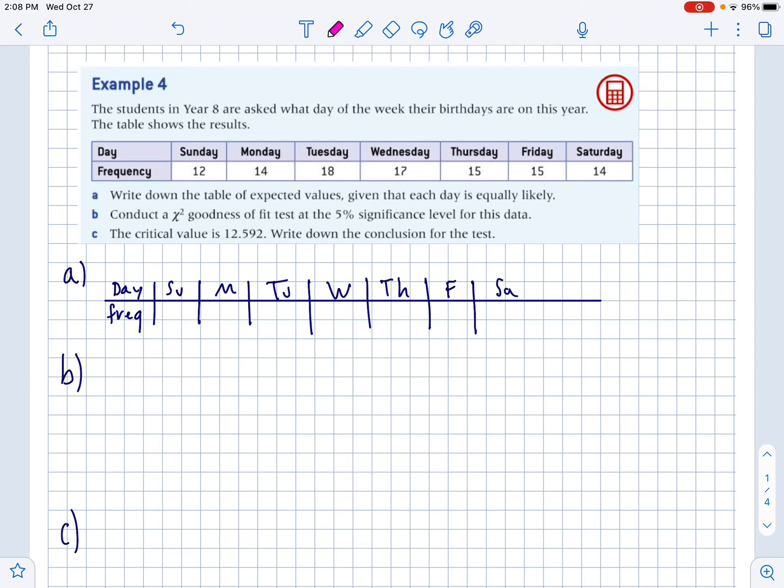We're going to do two different types of goodness of fit tests today. The first one is about example four. The students in year eight are asked what day of the week their birthdays are on this year. The table shows the following results. 12 kids said that their birthday is on Sunday, 14 on Monday, 18 on Tuesday, 17 Wednesday, etc. But these are not quite even.